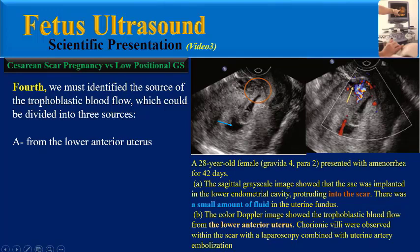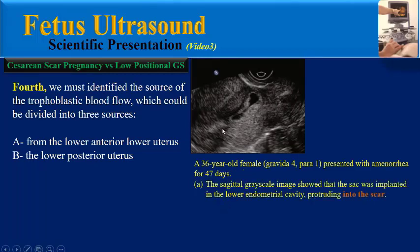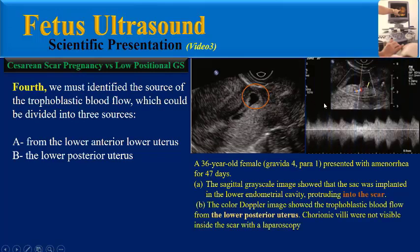Chorionic villi were observed within the scar with laparoscopy combined with uterine artery embolization. Another type is from the lower posterior uterus. In another example, a 36-year-old pregnant female: the sagittal grayscale image shows that the sac was implanted in the lower endometrial cavity, protruding into the scar. The color Doppler image shows the trophoblastic blood flow from the lower posterior uterus, and chorionic villi were not visible inside the scar with laparoscopy.